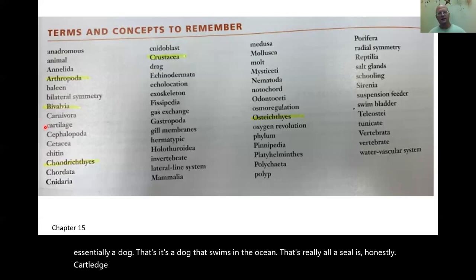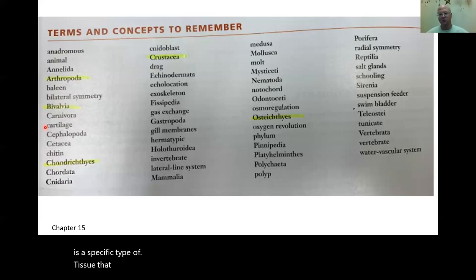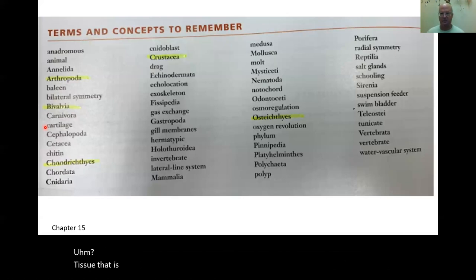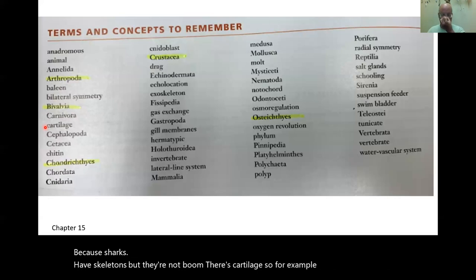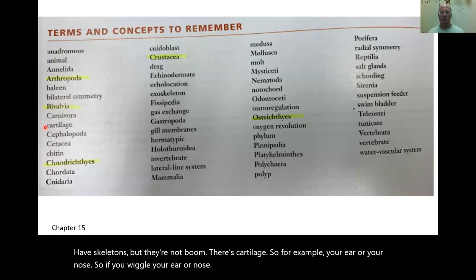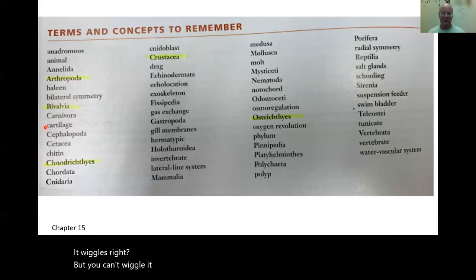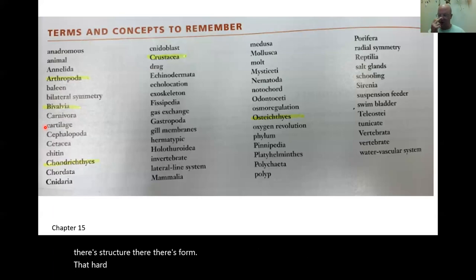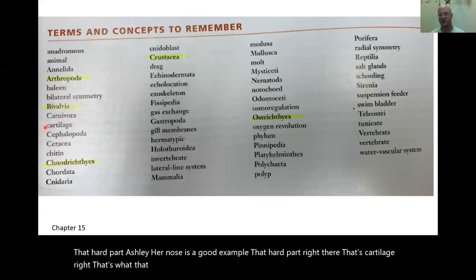Cartilage is a specific type of tissue that is flexible and soft but has form to it. Cartilage is important in this class because sharks have skeletons, but they're not bone — they're cartilage. Your ear or nose is a good example. If you wiggle your nose, it wiggles but you can tell there's structure there. That hard part is cartilage, and that's what shark skeletons are made of.